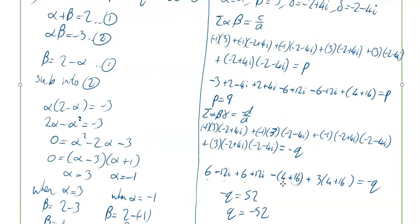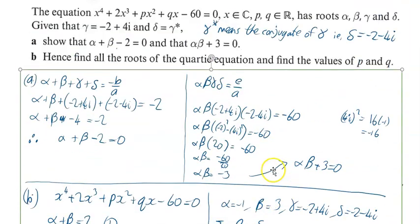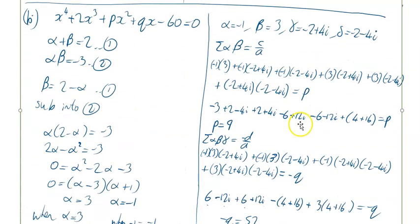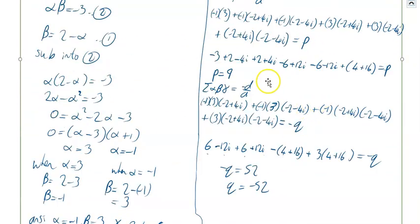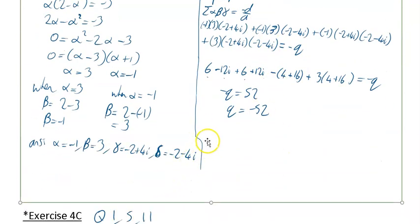Reading the question to make sure we've done everything: find the roots of the quartic equation and find the values of P and Q. P equals 9 and Q equals minus 52. We're now ready to do the exercise for C, questions 1, 5 and 11.